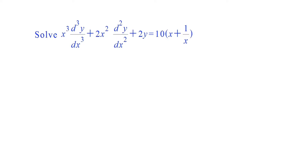Now we are going to learn how to solve the differential equation of Cauchy-Euler form. Here we have the equation: x cubed d³y/dx³ plus 2x squared d²y/dx² plus 2y is equal to 10 times (x plus 1/x).